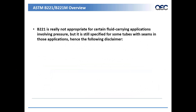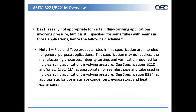B221 is really not appropriate for certain fluid-carrying applications involving pressure. But sometimes users still want to use B221 for some tubes with seams used in those applications. So B221 has the following disclaimer: pipe and tube products listed in this specification are intended for general purpose applications. This specification may not address the manufacturing processes, integrity testing, and verification required for fluid-carrying applications involving pressure. It then directs you to the standards that are more appropriate for those types of uses.